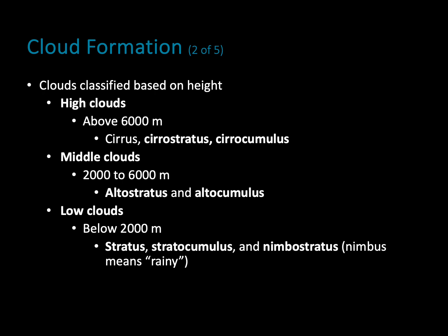In addition to shape, we also want to know what height our cloud is. Based on whether they are high, middle, or low clouds, we give them different root words at the beginning of their name. If we're looking at really high clouds — above 6,000 meters above the surface — we're going to call these some type of cirrus cloud, whether it's cirrostratus or cirrocumulus. Starting the name with cirrus tells us it's a high cloud above 6,000 meters.